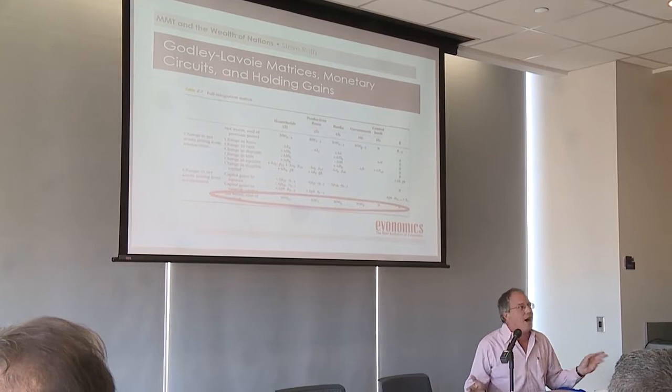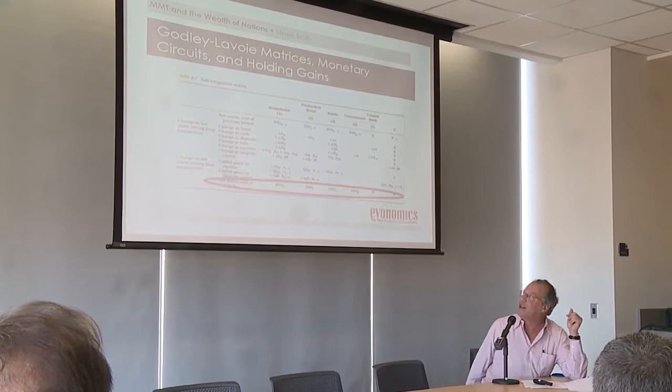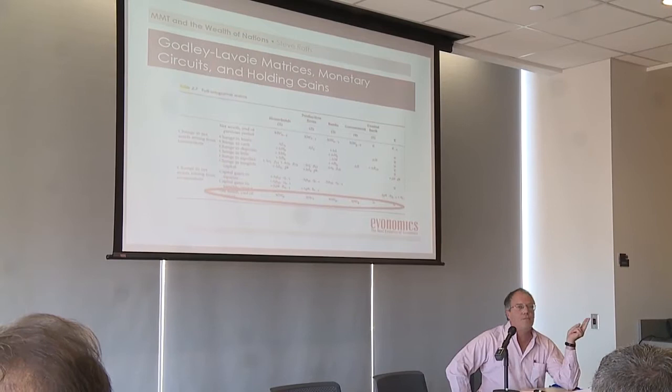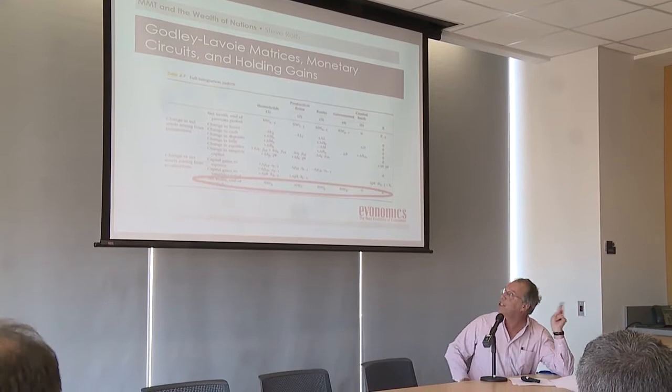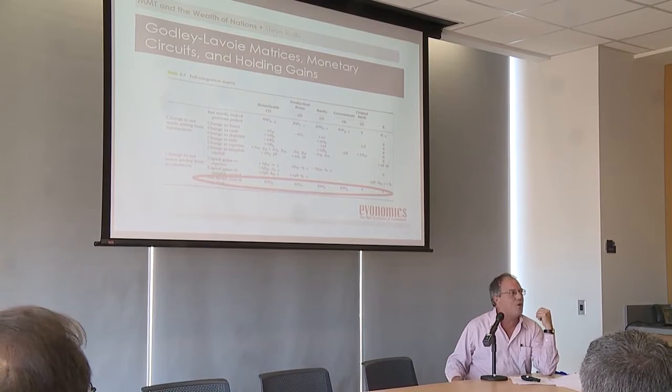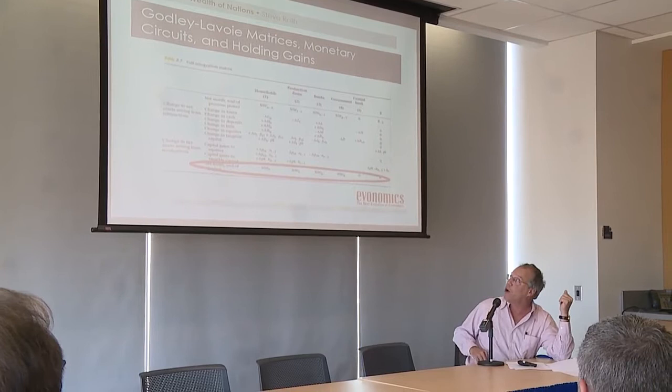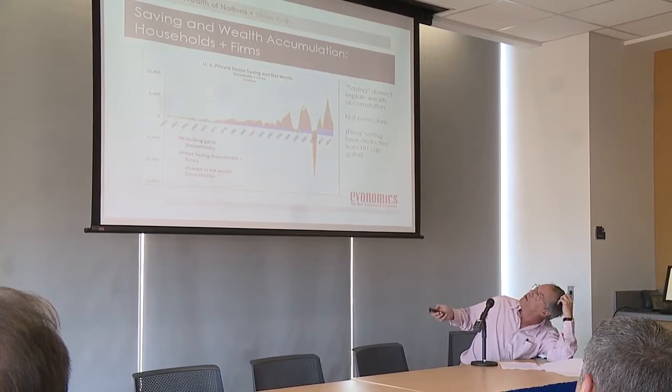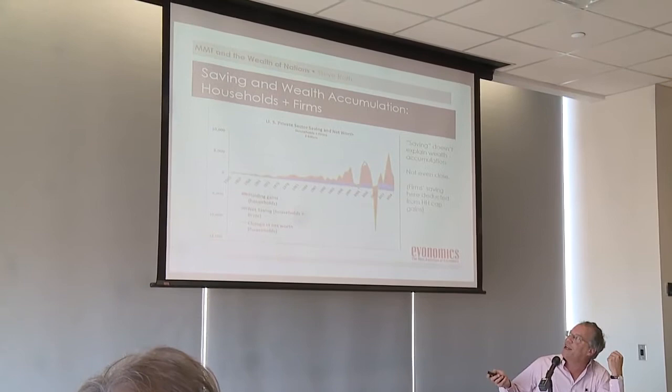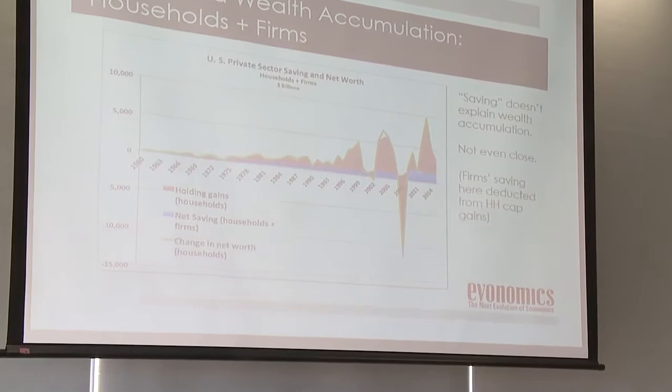Godley and Lavoie get this — there are two matrices in their book that include capital gains, and they're the two that don't balance to zero across the bottom, as they shouldn't and can't because they balance to net worth. Saving and holding gains combined equal wealth accumulation, and you can see that saving is a reasonably small slice of it.